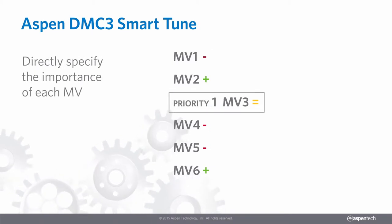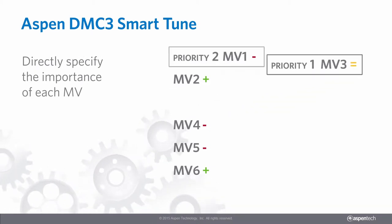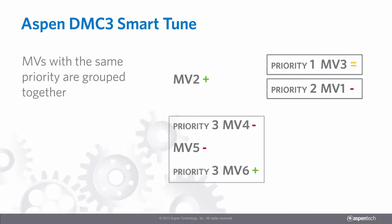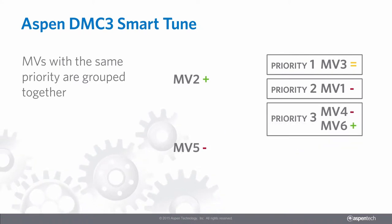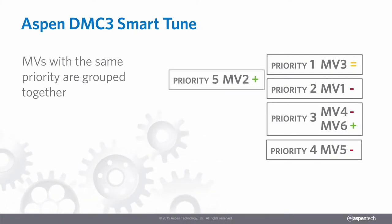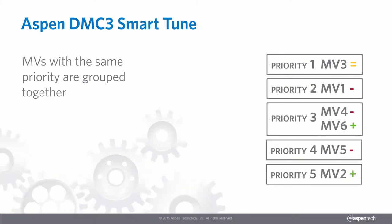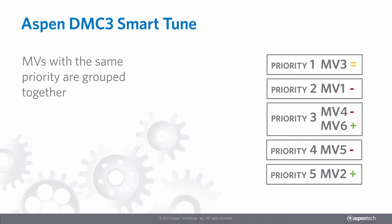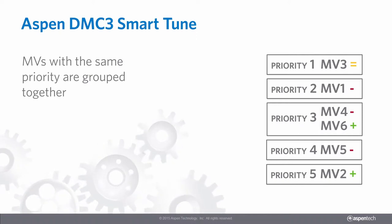The next step is to specify priorities for MVs that have a preferred economic direction. Here, you can directly specify which MVs achieve their preferred optimization direction first. Each priority group is assigned its own objective function, and MVs with the same priority are grouped together in one objective function.